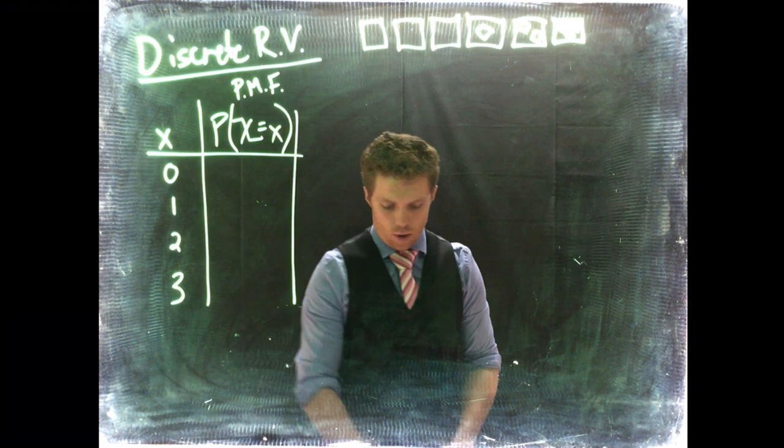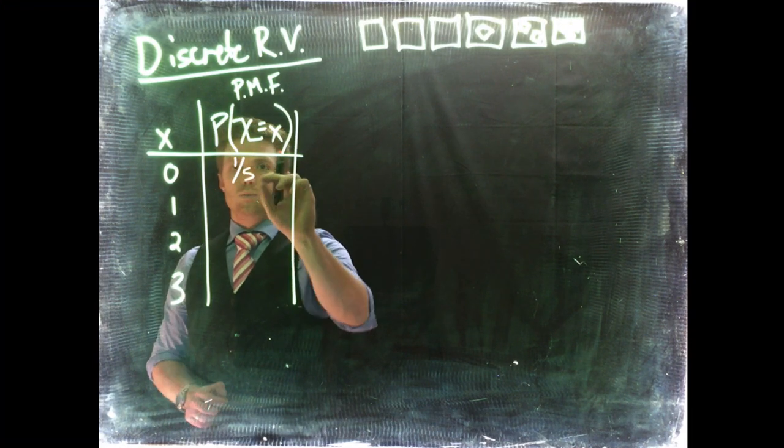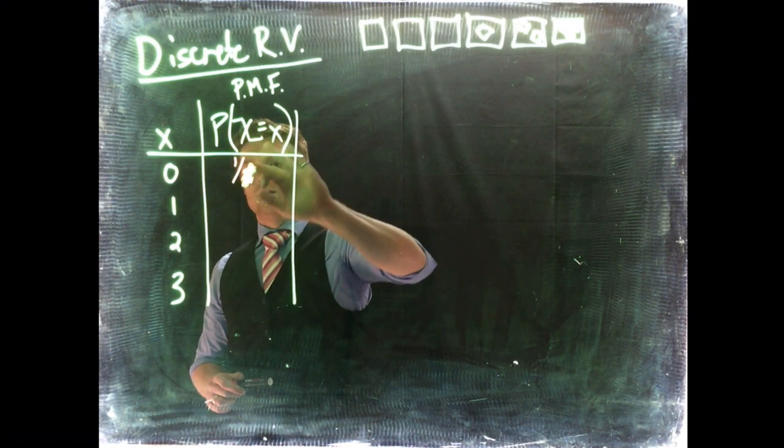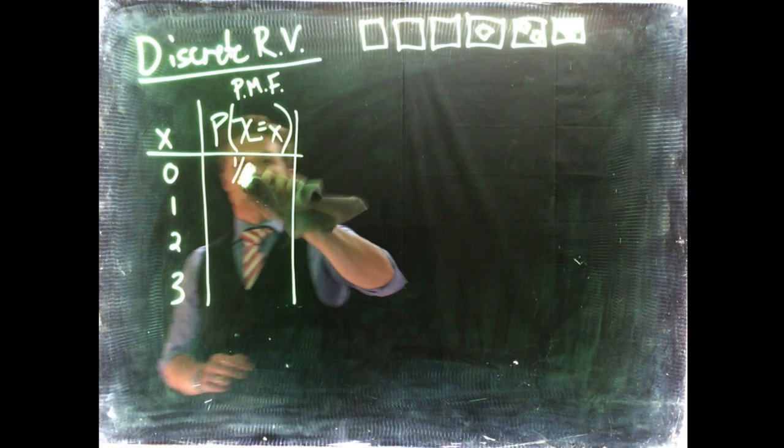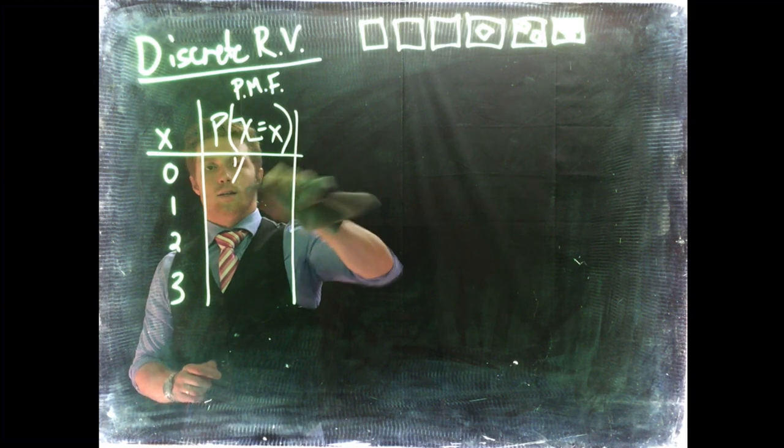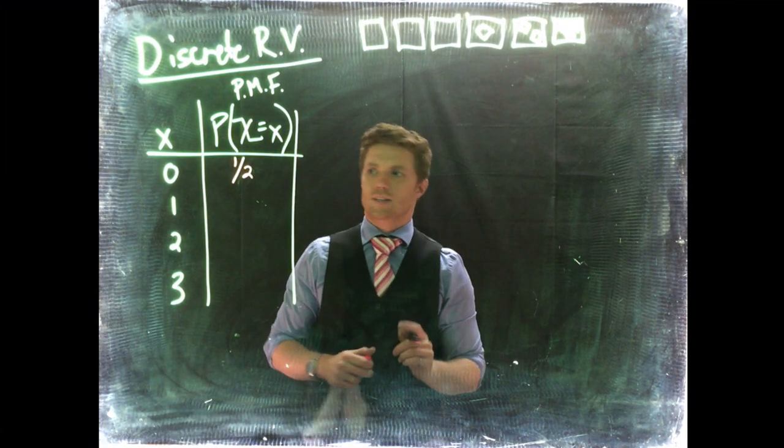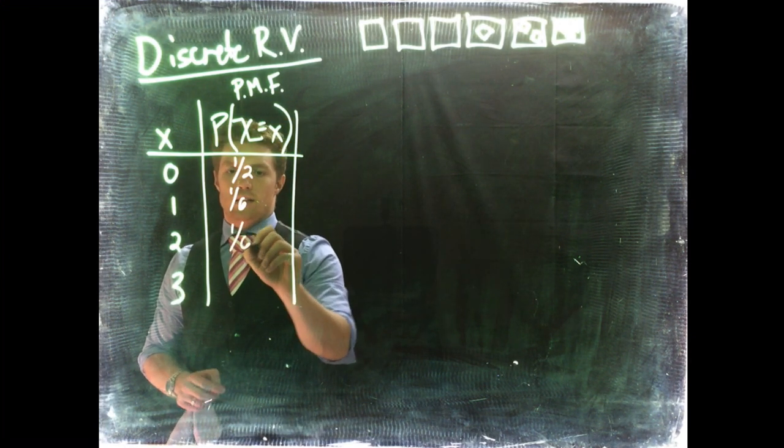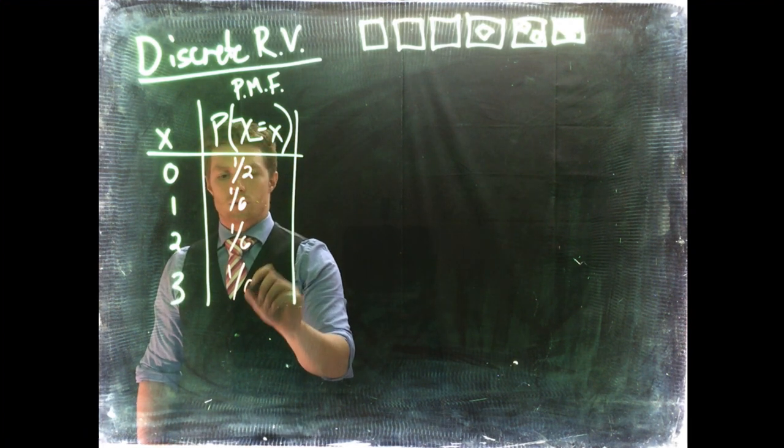Now the associated probabilities for each of these: there's a 50% chance of being zero, one-sixth for one, one-sixth for two, and one-sixth for three.